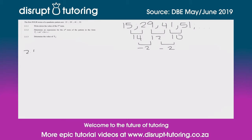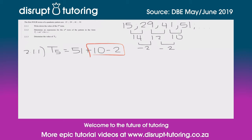Now we need to find the fifth term, t5. We add the next first difference, which is 10 subtract 2, giving us 8. So t5 is 51 plus 8, which gives us 59 — that's the fifth term.